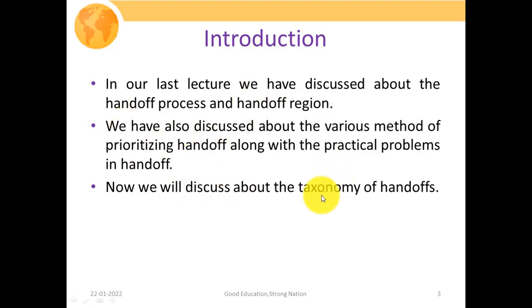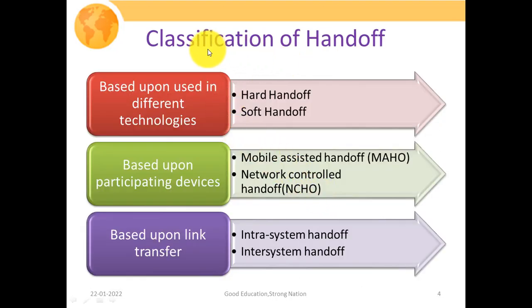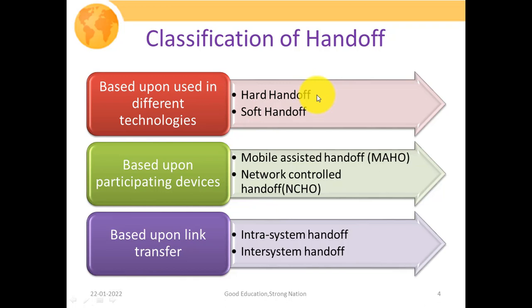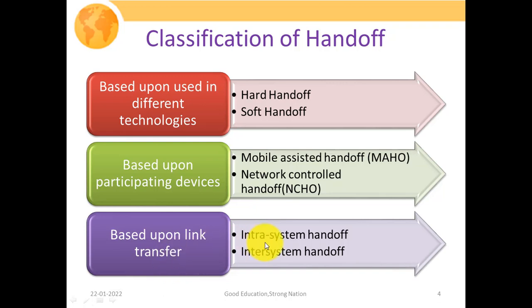Now in this particular lecture, we're going to discuss about the taxonomy of handoff processes. The classification is based on three parameters: first, different technologies used — hard handoff used in GSM and soft handoff used in CDMA. Second, participating devices — mobile assisted handoff and network controlled handoff. Third, based on link transfer — intra-system handoff and inter-system handoff, depending on whether handoff takes place within the same MSC coverage or across different MSCs.